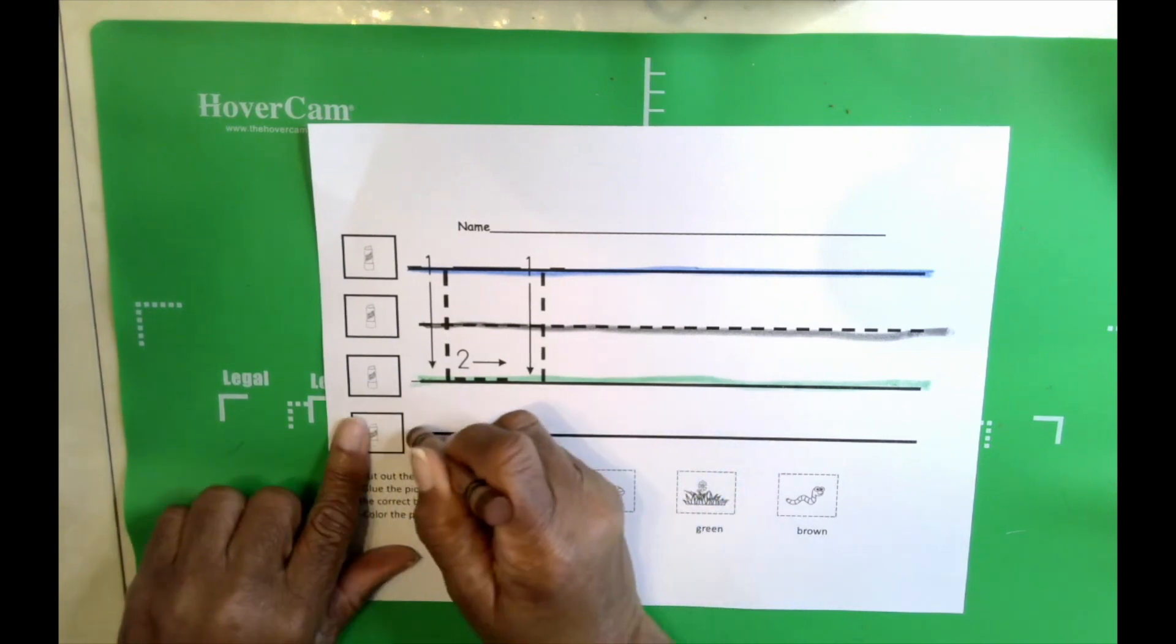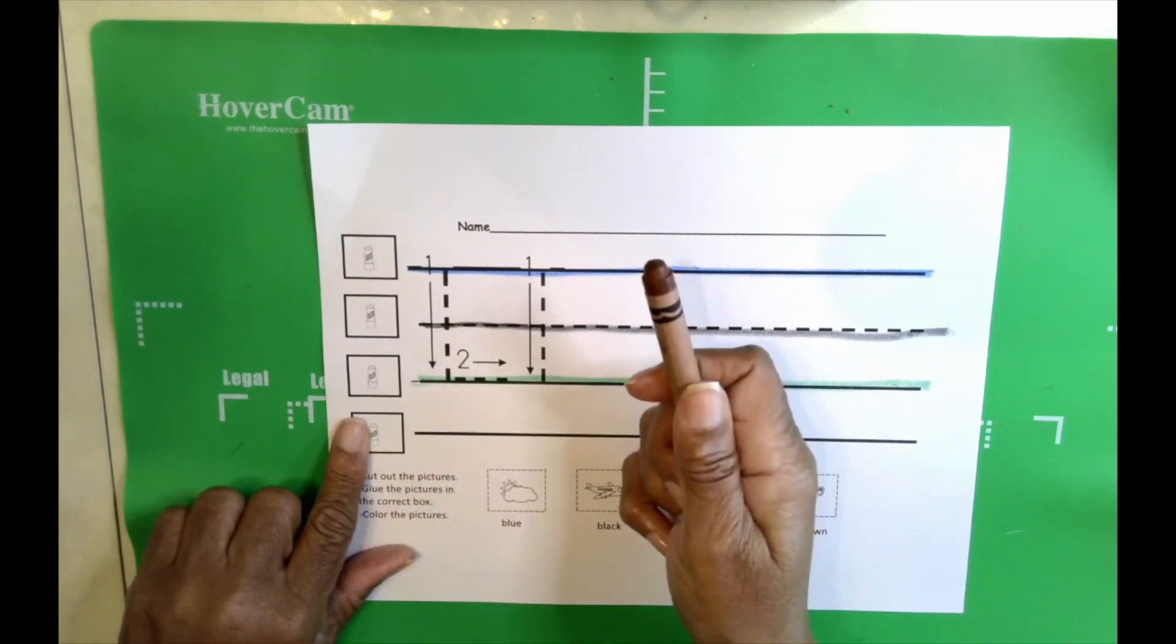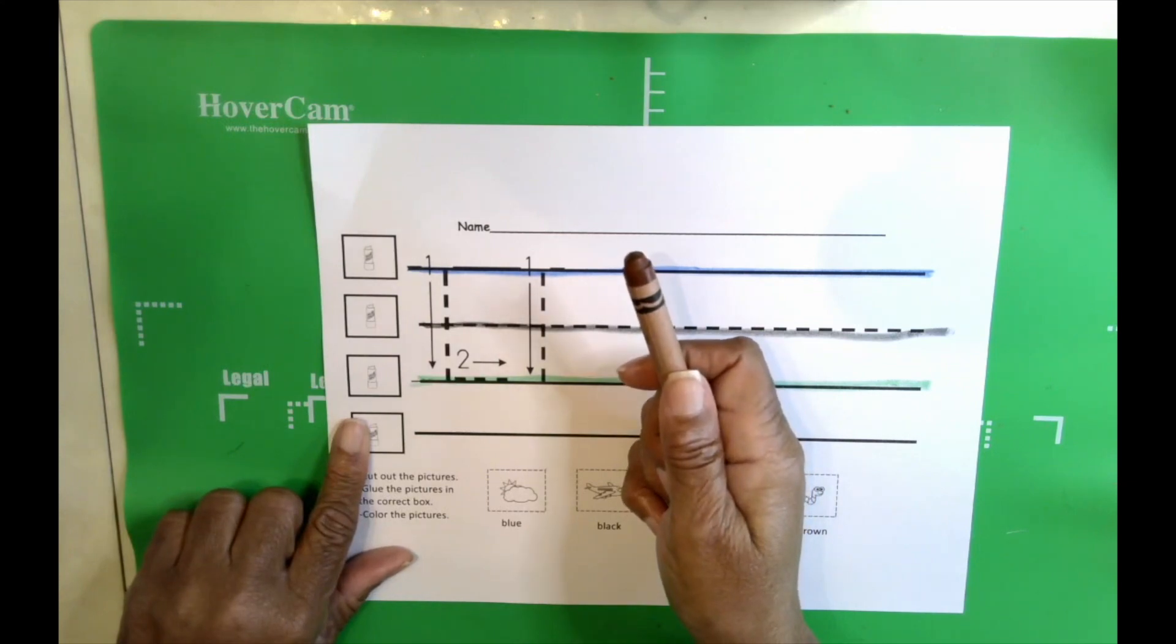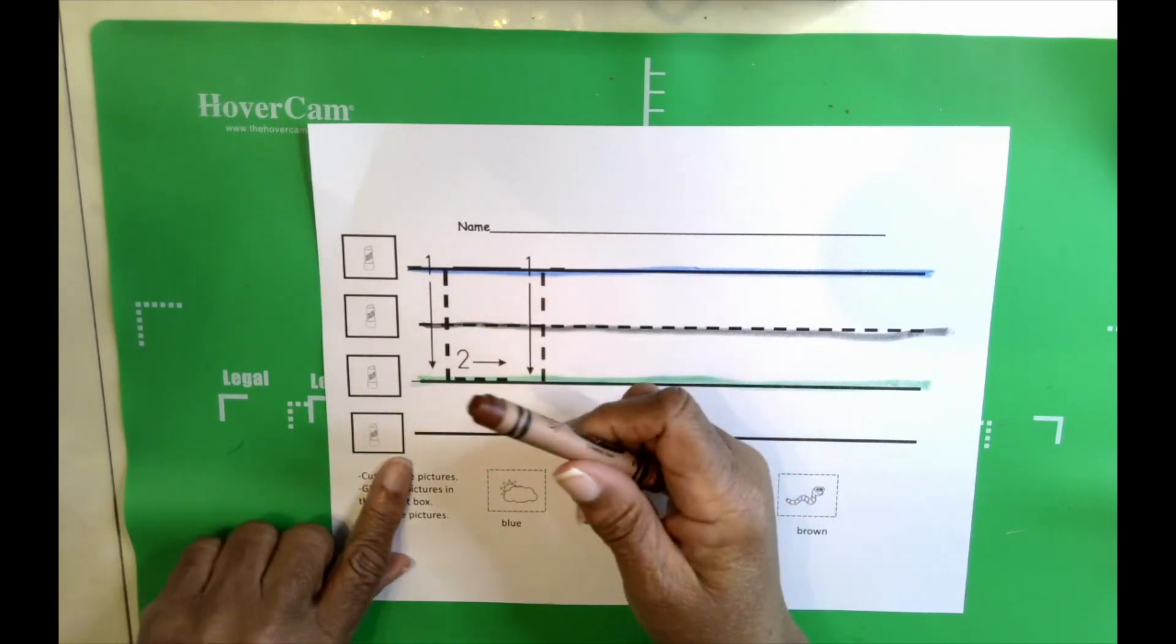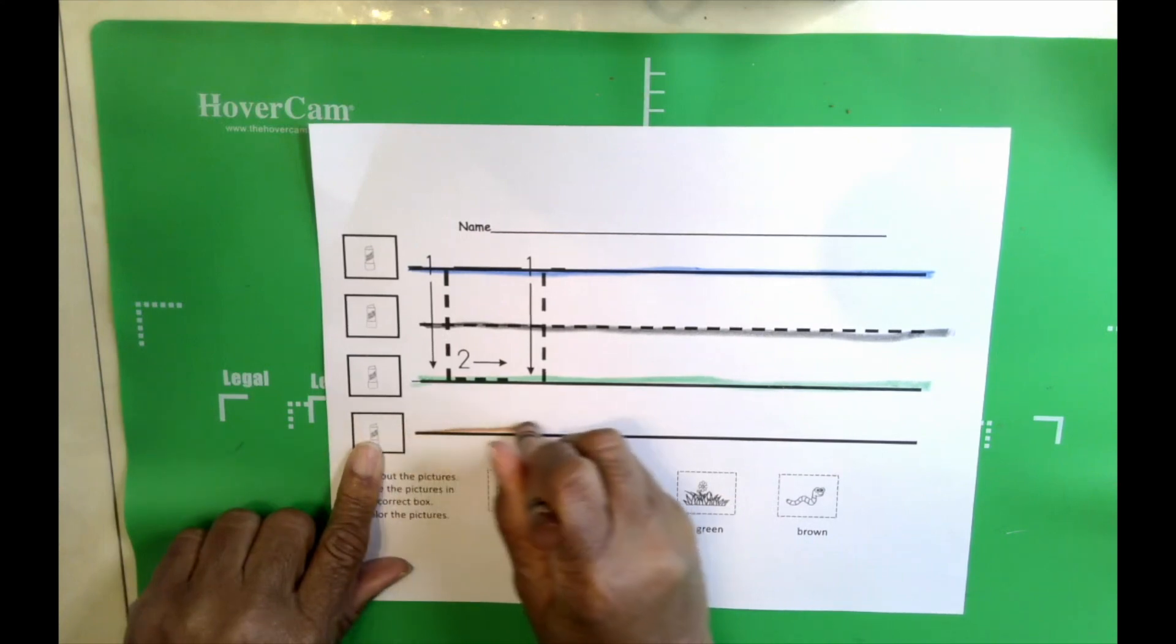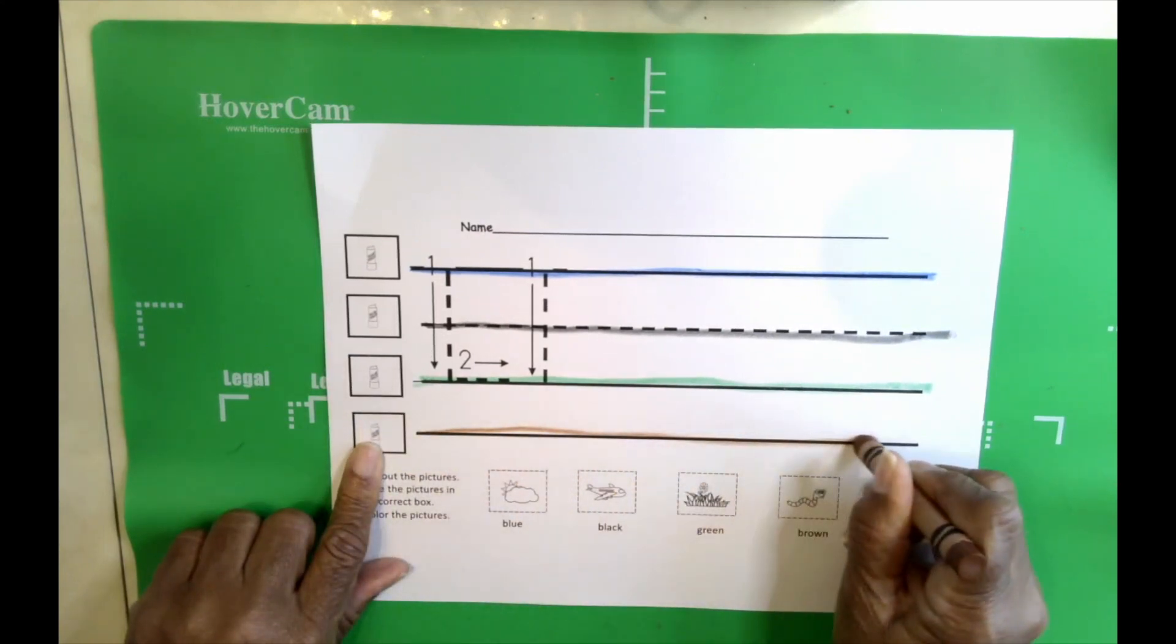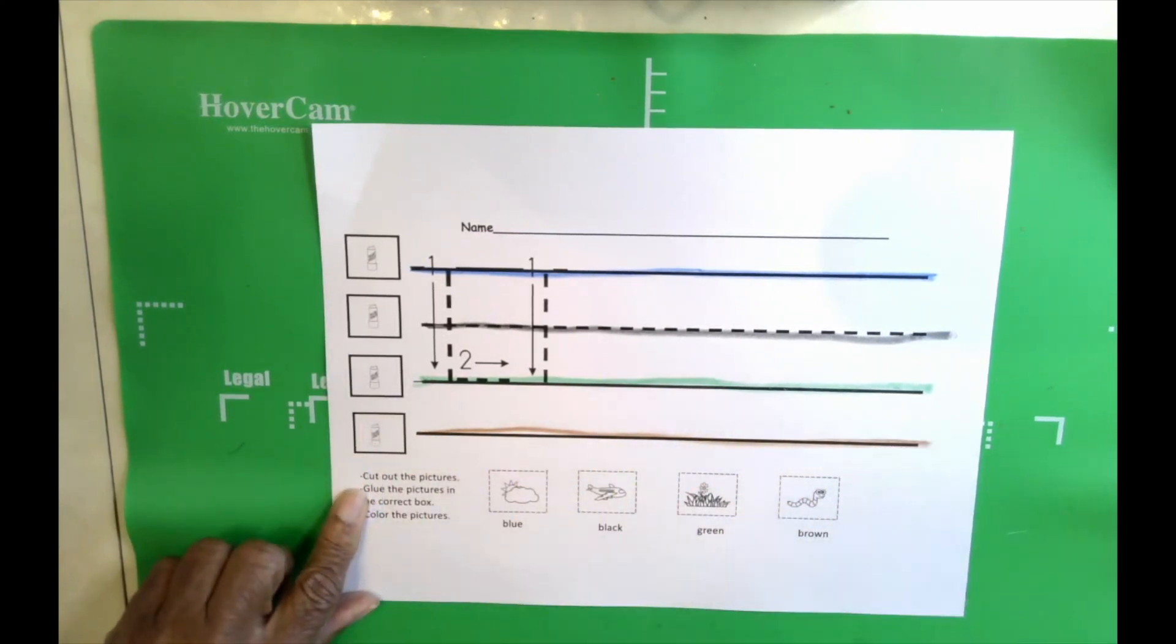And the last line is, show me brown. The last line is brown. And it's our worm line. Very good boys and girls.